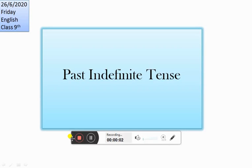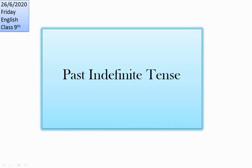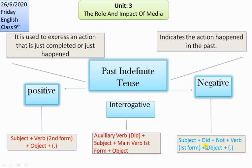Today we are going to learn about past indefinite tense, or simple past tense. Past indefinite tense represents an action that occurred in the past or a habit of the past. It is used to express an action that is just completed or just happened — things that happened in the past and are not currently happening.